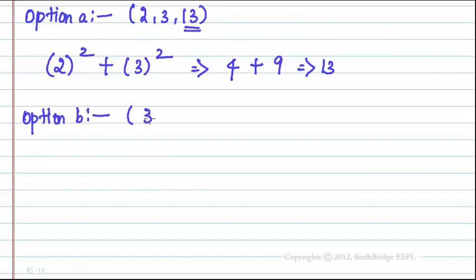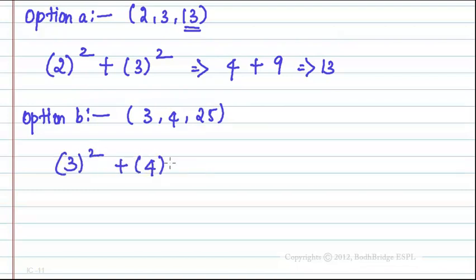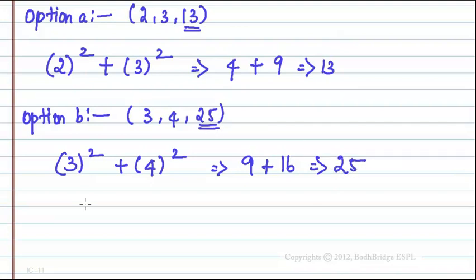Same way, Option B: 3, 4, 25. We can write this as 3 squared plus 4 squared. 3 squared is 9, plus 4 squared is 16. So 9 plus 16 equals 25 — that is the third term.